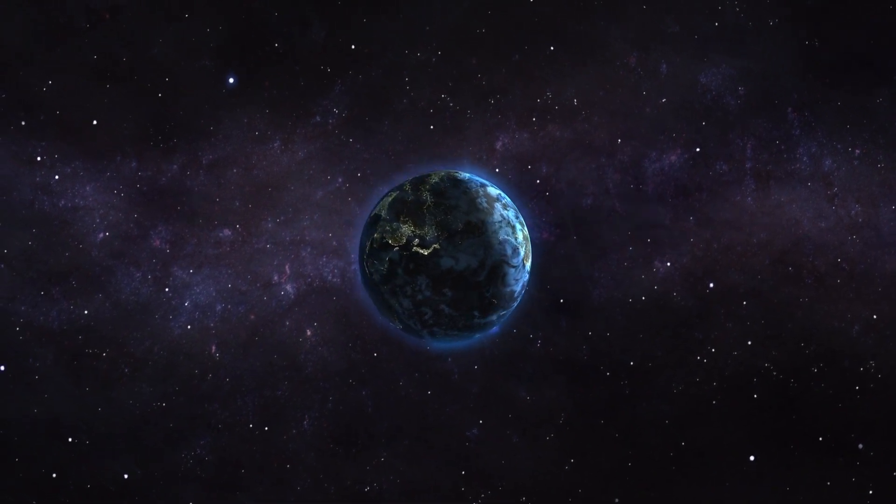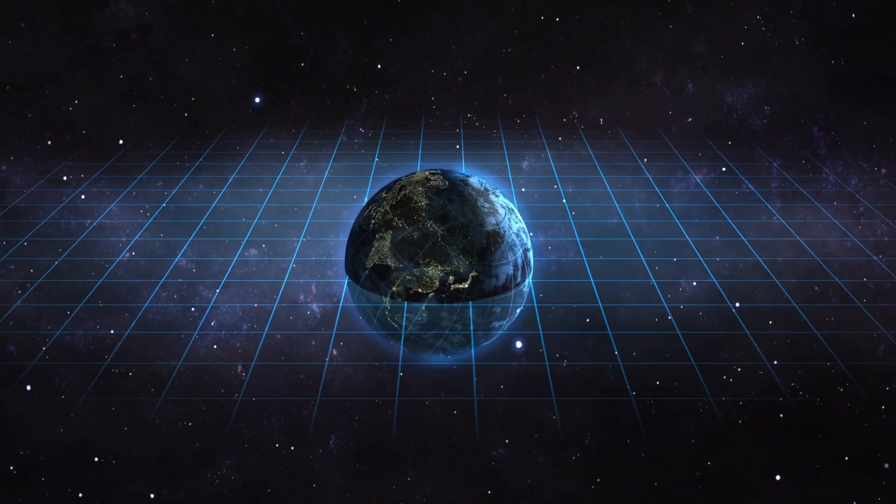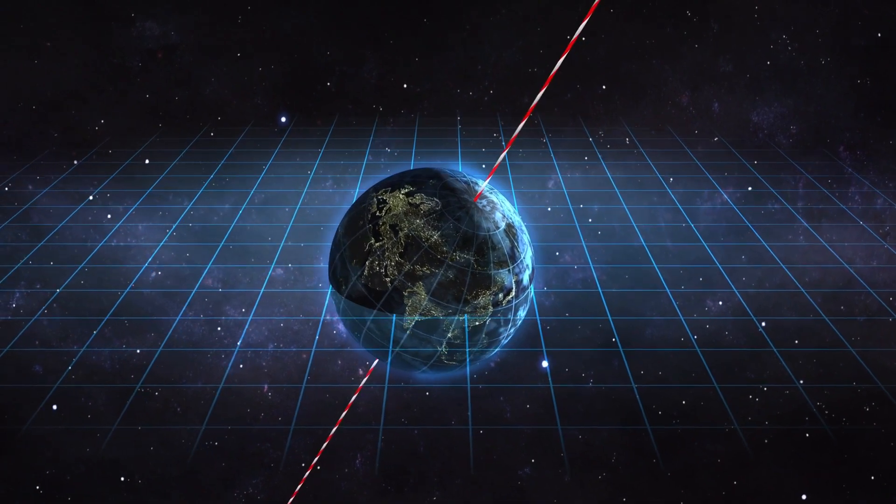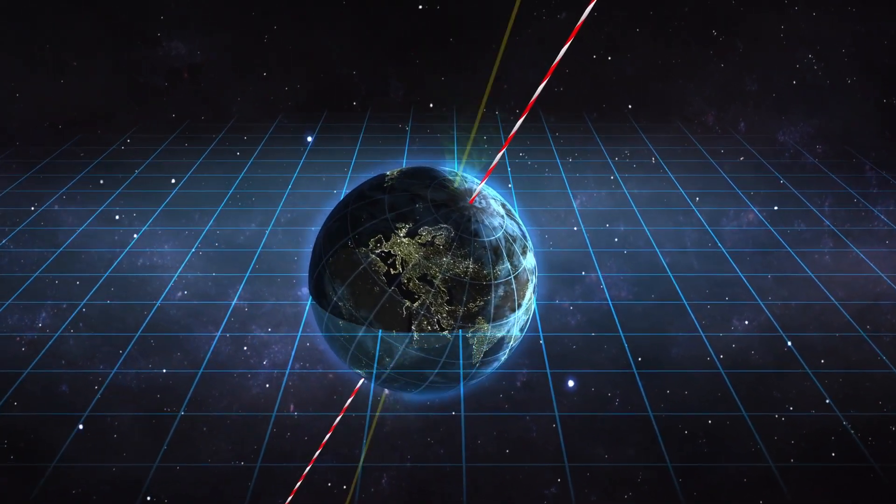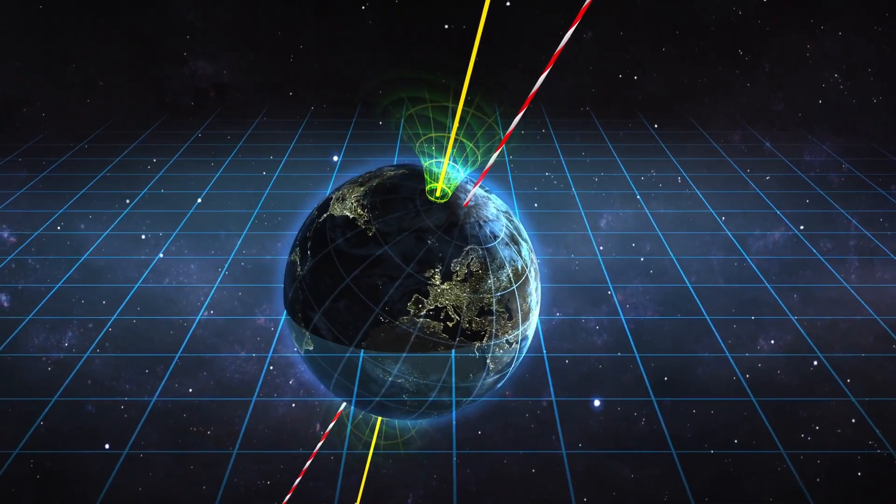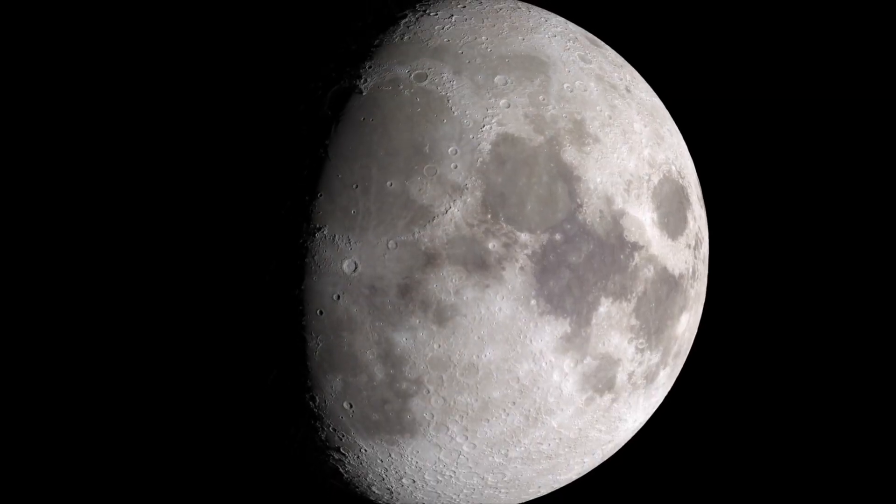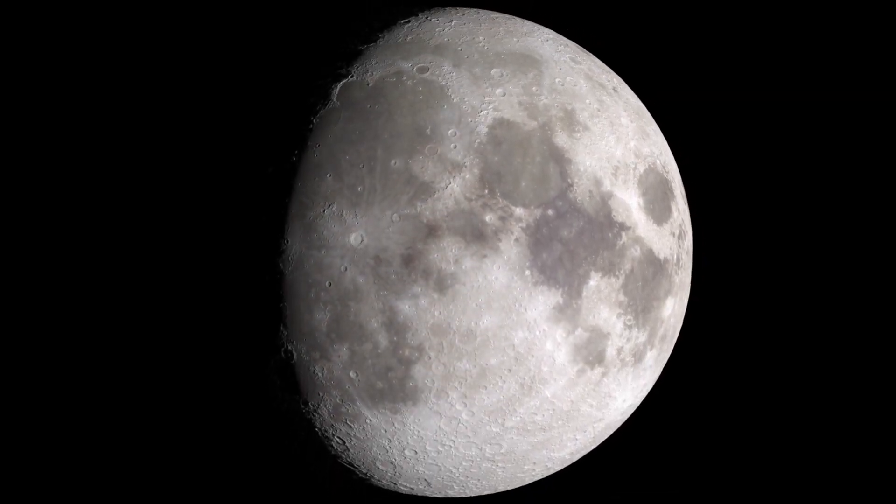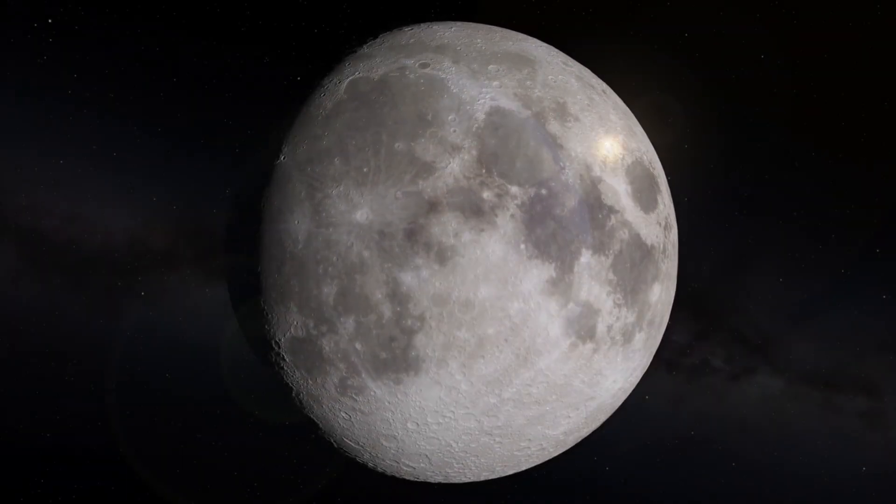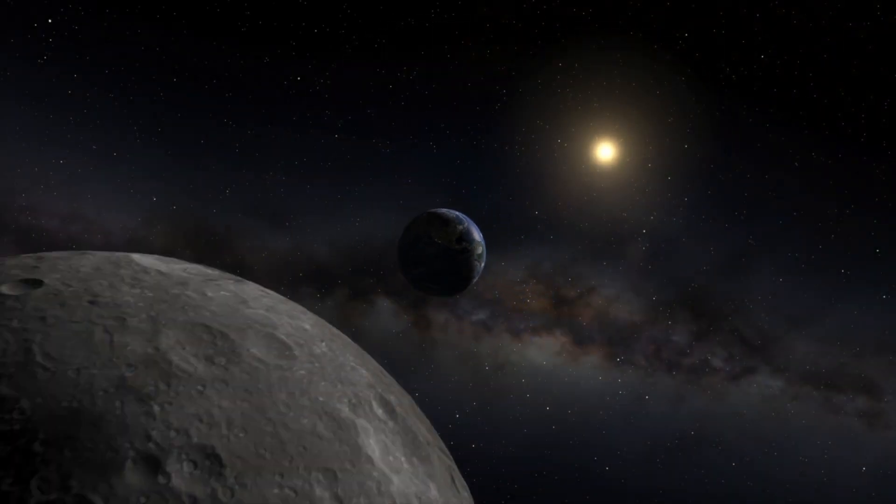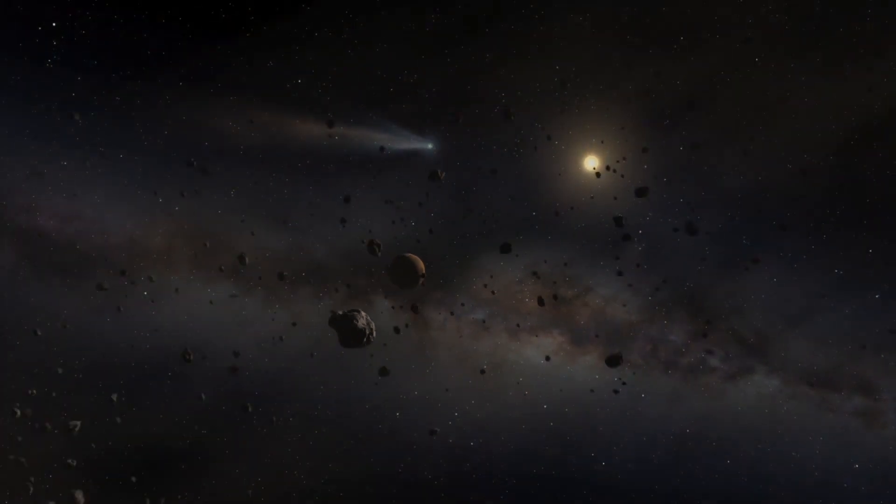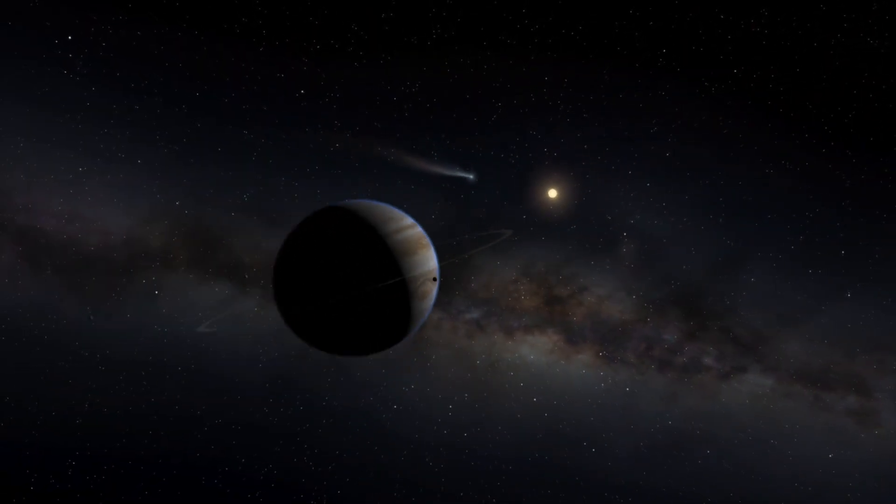Closer to home, our own Earth has an inexplicable 23 and a half degree tilt. Its spin axis is radically misaligned from its magnetic pole. And our moon is comparatively large for a planet our size. Now, a new theory may be able to explain many of these oddities.